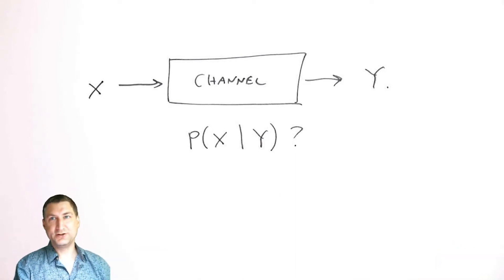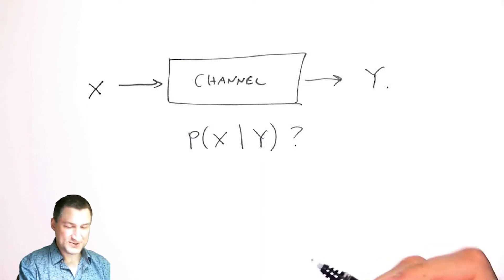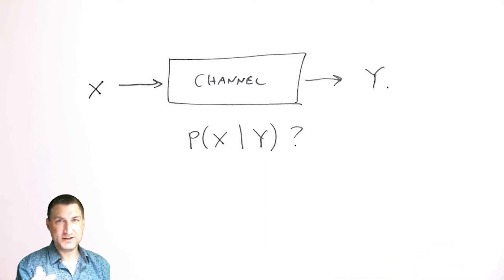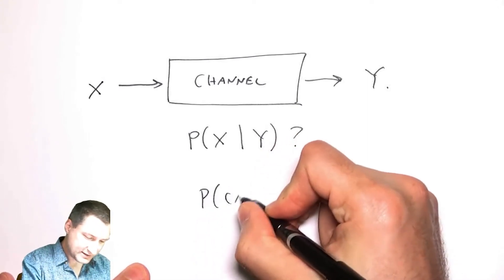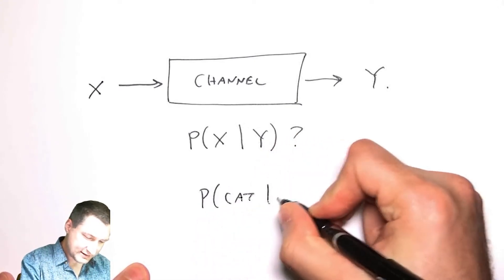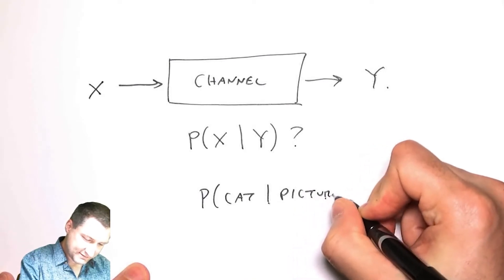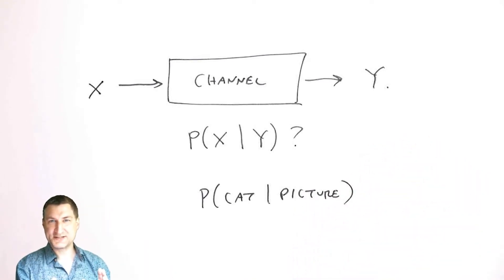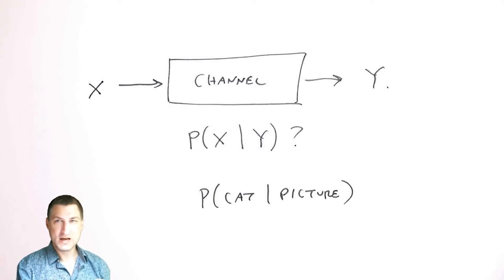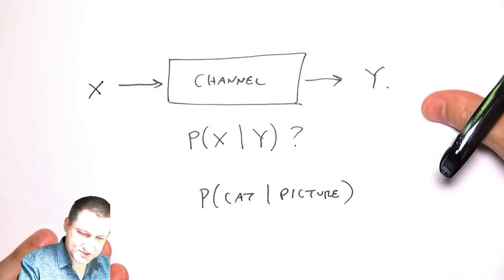Or in machine learning, I observe a picture and I want to know what is the probability that that picture is of a cat. We talked a little bit about these kinds of things in the context of events in one of our earliest lectures, but now I can talk about this in terms of random variables.